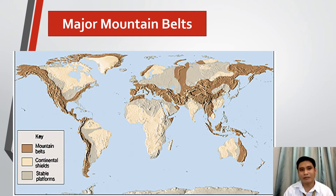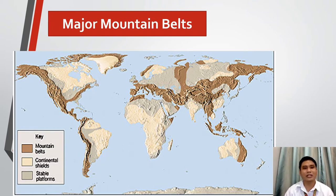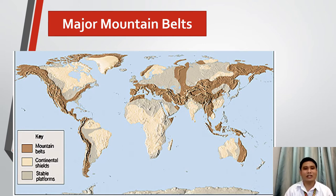For this last picture, this contains the major mountain belts. It shows us all of the mountain ranges or major mountain belts across all continents. As you can see, they also create patterns just like the volcanoes and earthquakes. There are certain areas where major mountain belts are present, and these areas also have earthquake activities in them.